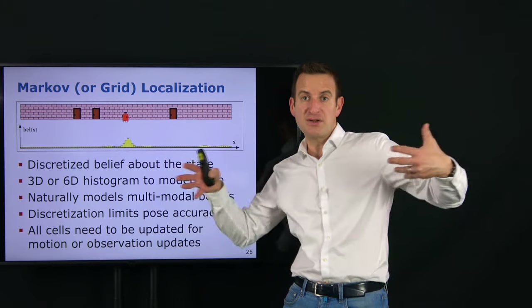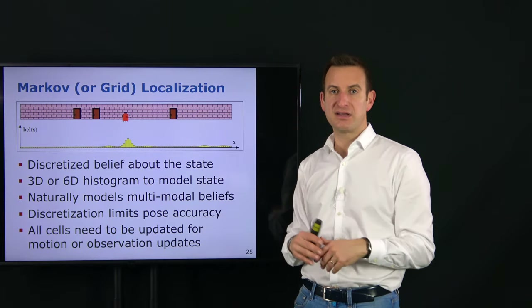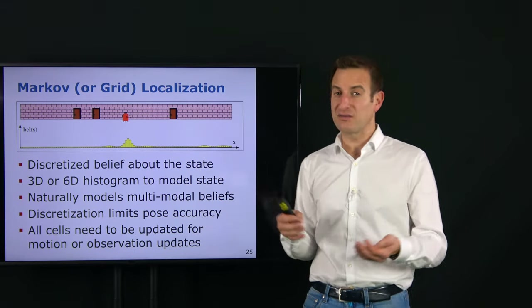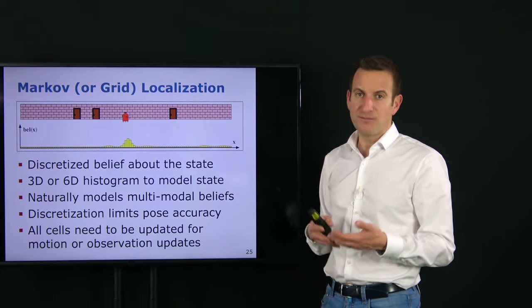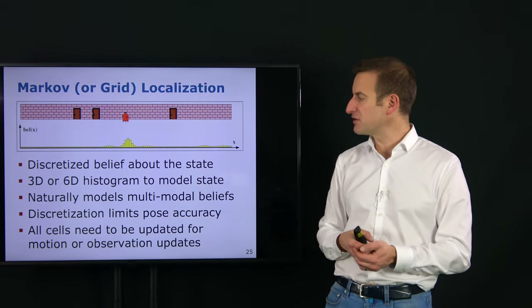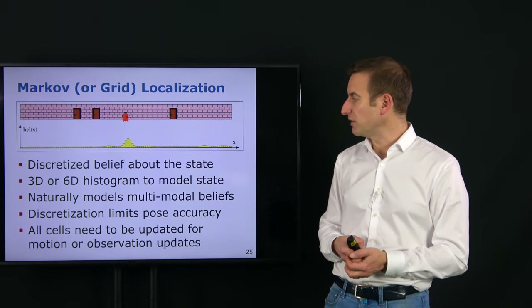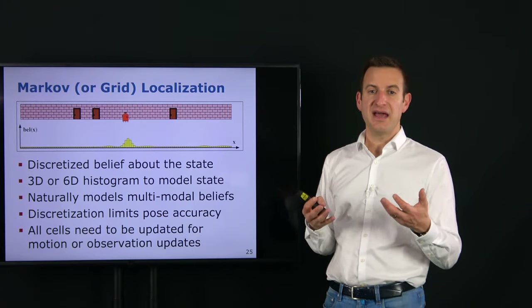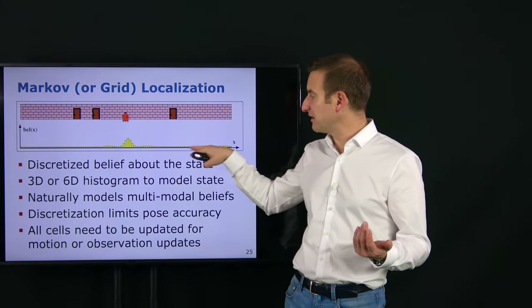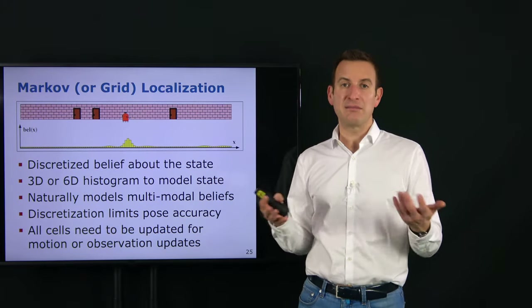For 6 degrees of freedom localization, this becomes a 6D histogram, which gets complex quickly. For typical 2D indoor localization with a wheeled platform, a 3D grid representing the belief is standard. The great advantage of this approach is that it naturally handles multimodal beliefs — any number of modes can be represented simply by having a probability value for every cell.